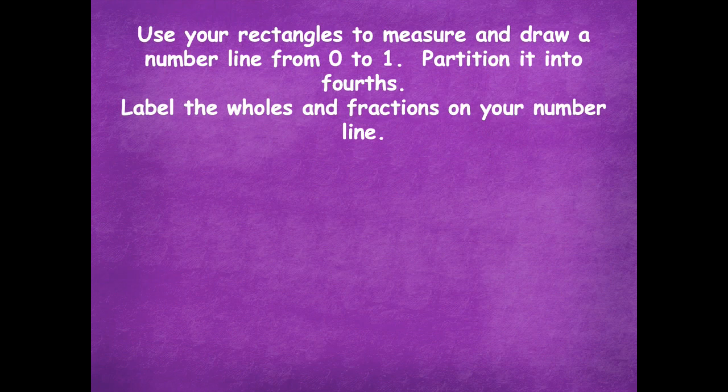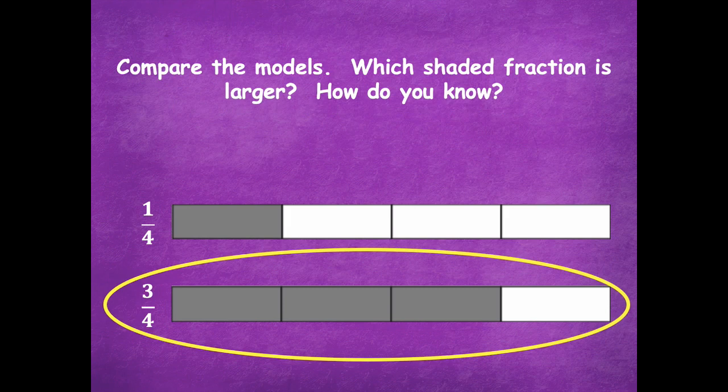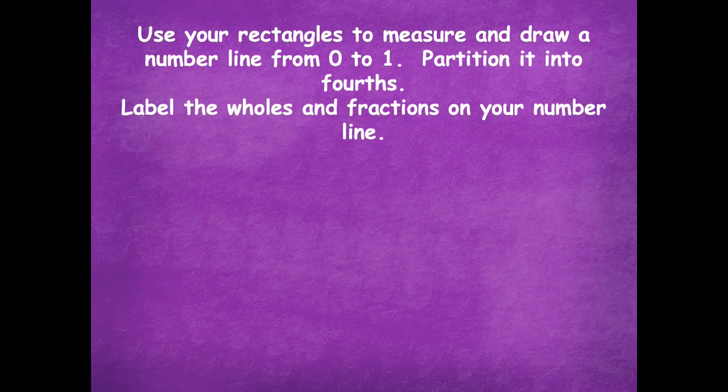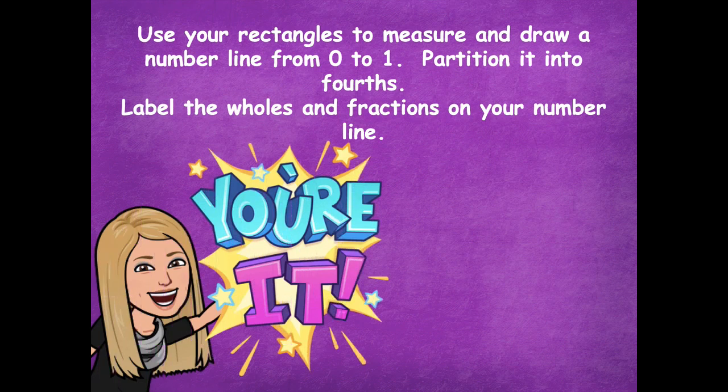Now we're going to use our rectangles to measure and draw a number line from zero to one, partition it into fourths, and label the holes and fractions on your number line. You can line up your dry erase board on top of your rectangle, or draw a new number line with four equal parts and label those parts. Pause the video, draw the number line partitioned into four parts, label the holes and fractions, and click play when you're ready for the next step.